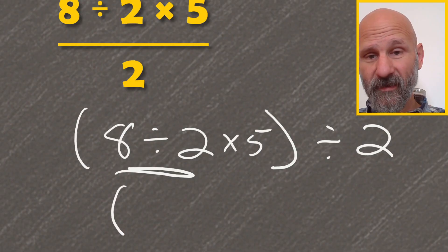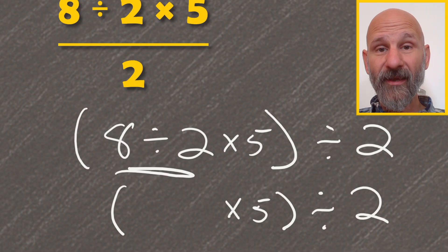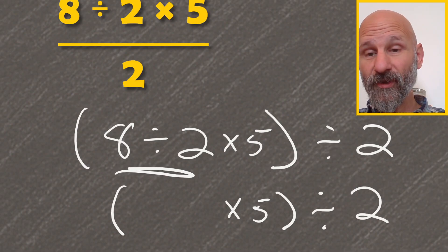So the parentheses stays, this divide by 2 stays, this times by 5 stays. The only thing that changes is the 8 divided by 2 changes to a 4.